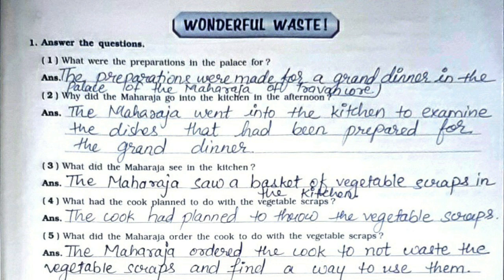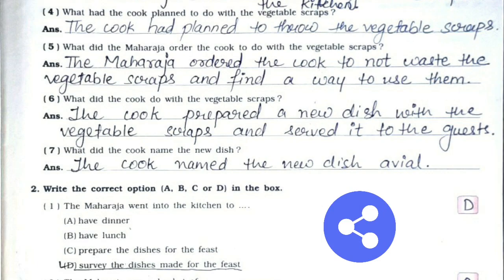Third: what did the Maharaja see in the kitchen? The Maharaja saw a basket of vegetable scraps in the kitchen. Fourth: what had the cook planned to do with the vegetable scraps? The cook had planned to throw the vegetable scraps. Fifth: what did the Maharaja order the cook to do? The Maharaja ordered the cook to not waste the vegetable scraps and find a way to use them.